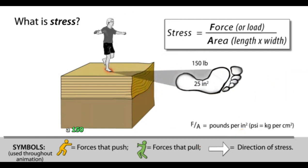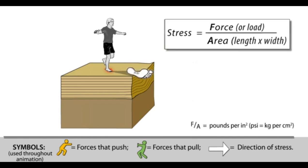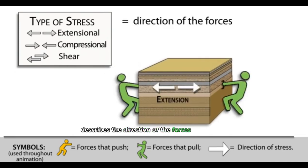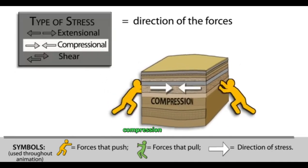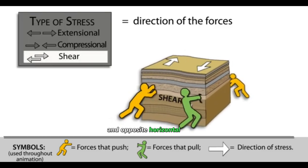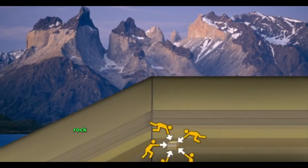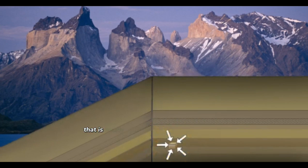For example, a 150-pound person standing on the ground exerts about 6 pounds per square inch on the sole of their foot. The type of stress describes the direction of the forces acting on it. For example, tension pulls, compression pushes, and opposite horizontal forces shear. Thirty miles deep, rock undergoes a compressive stress in all directions that is nearly 200,000 pounds per square inch.